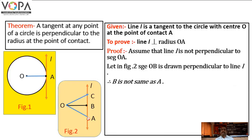Hence, point B and point A are not the same, because we assumed line L is not perpendicular to segment OA, and in figure 2, OB is drawn perpendicular to line L. Therefore, points A and B are two distinct points.